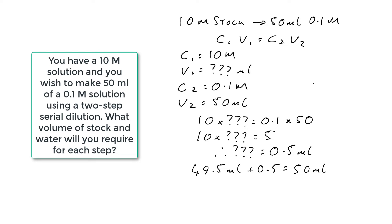However, adding 0.5 mils to 49.5 mils is quite difficult in the lab. It's not particularly accurate because measuring cylinders tend to work to 50 mils, and measuring out 49.5 mils is very difficult. So therefore we use a two-step serial dilution to make this a bit easier and also to make it more accurate.